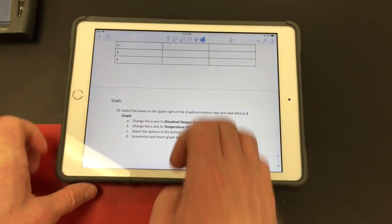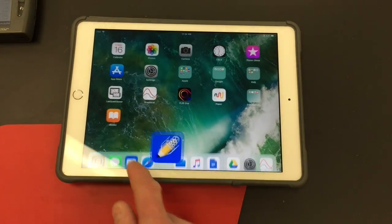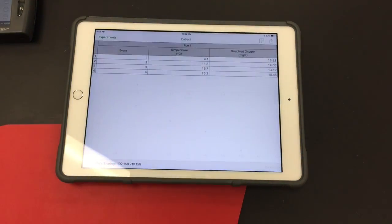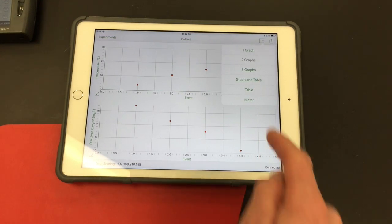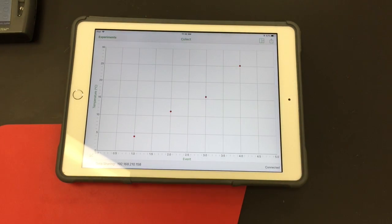And then the second thing I'm going to need to do is generate a graph. And so I'm going to select in the upper right and I'm going to select one graph and I need to manipulate or change the x and y-axis here.